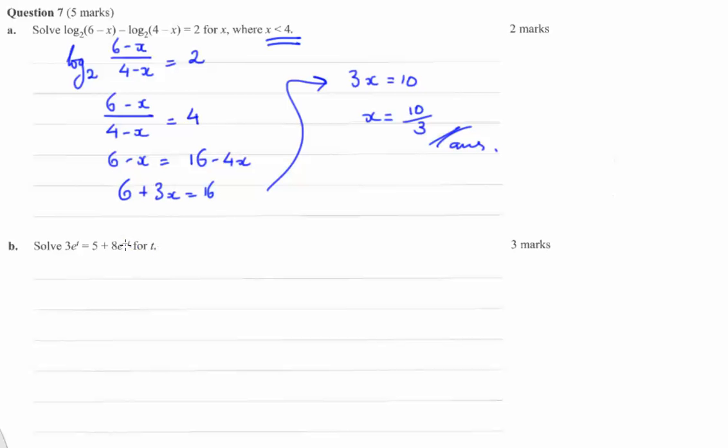Let's get rid of this negative t here by multiplying everything by e to the power of t. That gives us 3e to the power of 2t minus 5e to the t minus 8 equals 0.